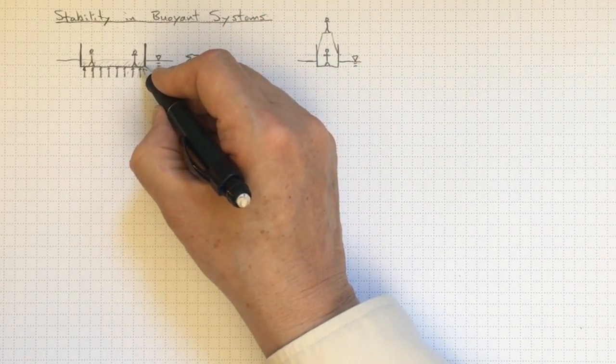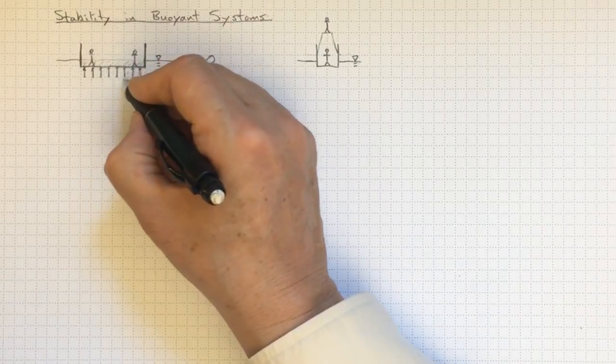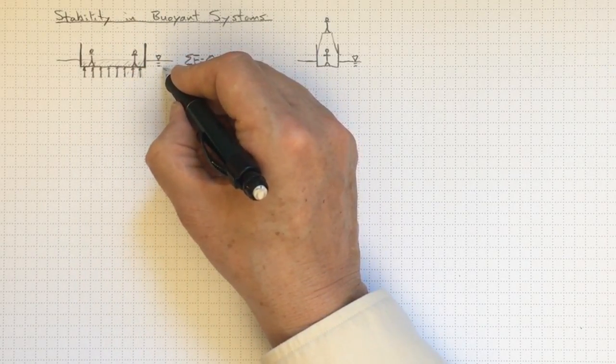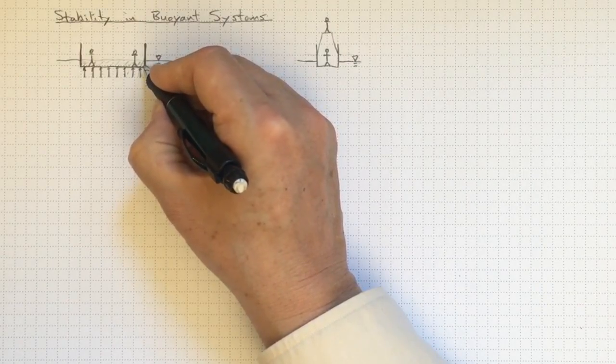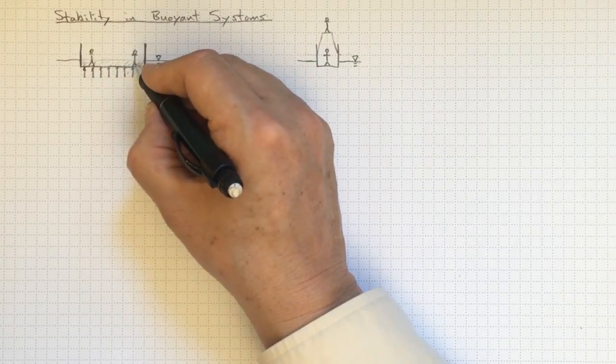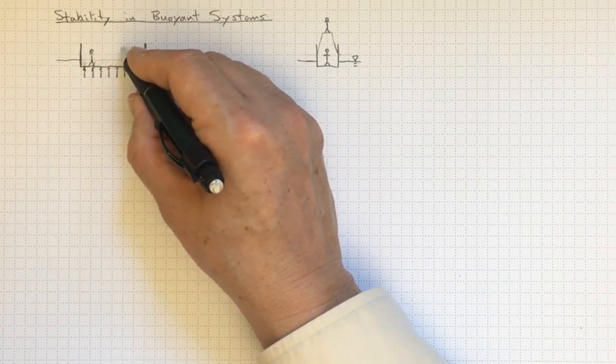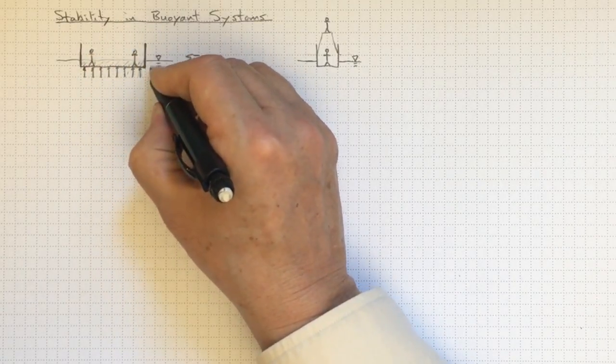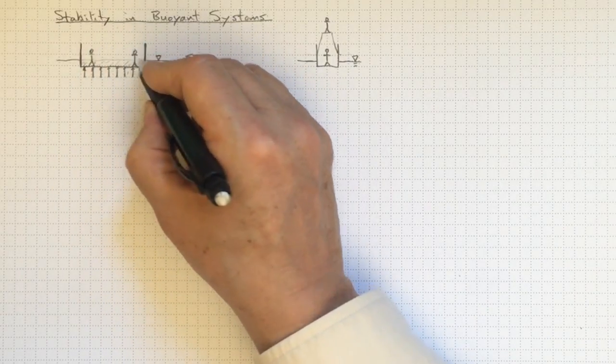And moments. If there was a moment acting on this system about any point, and we can take that moment about any point we want. If there was a net moment about a point, then there would tend to be an acceleration around that point. So the boat would tend to rotate either this way or that way, depending on the sign of the moment.